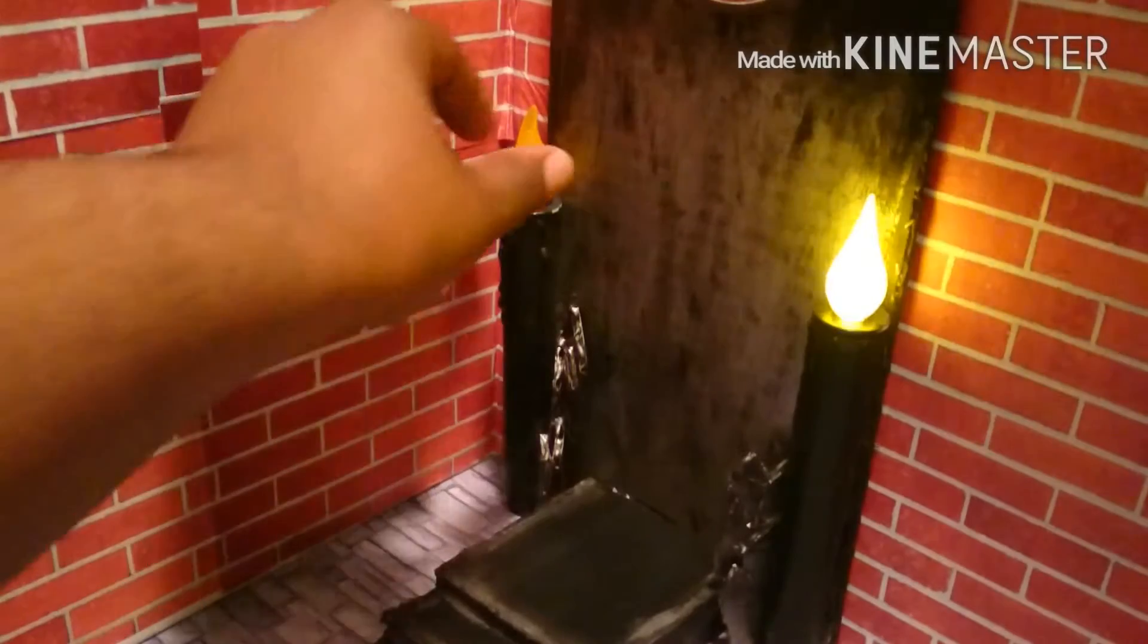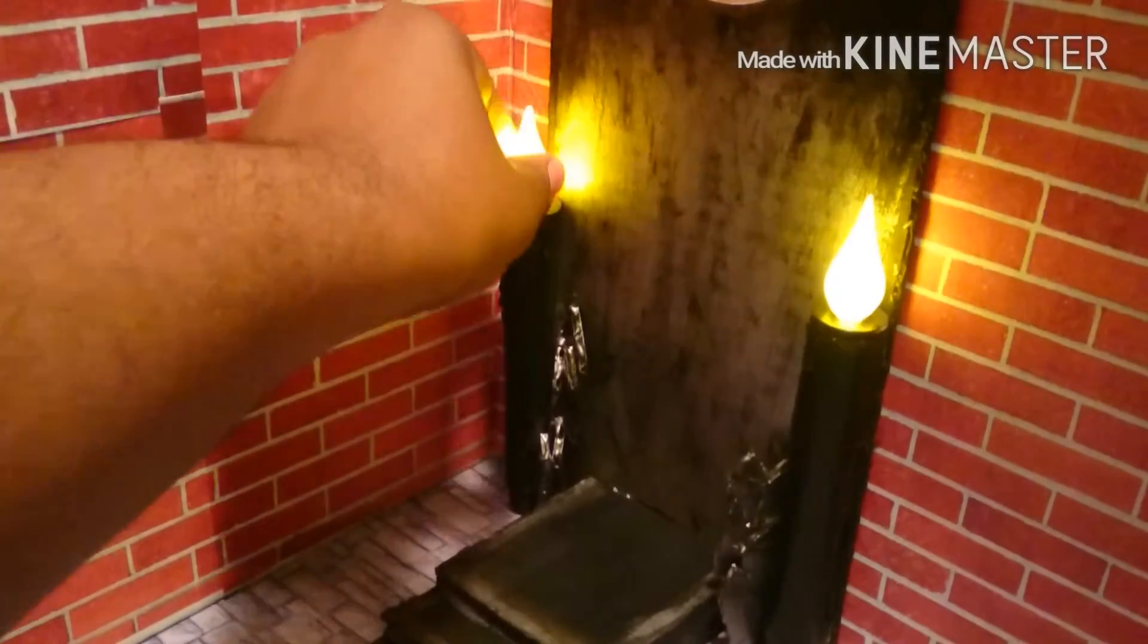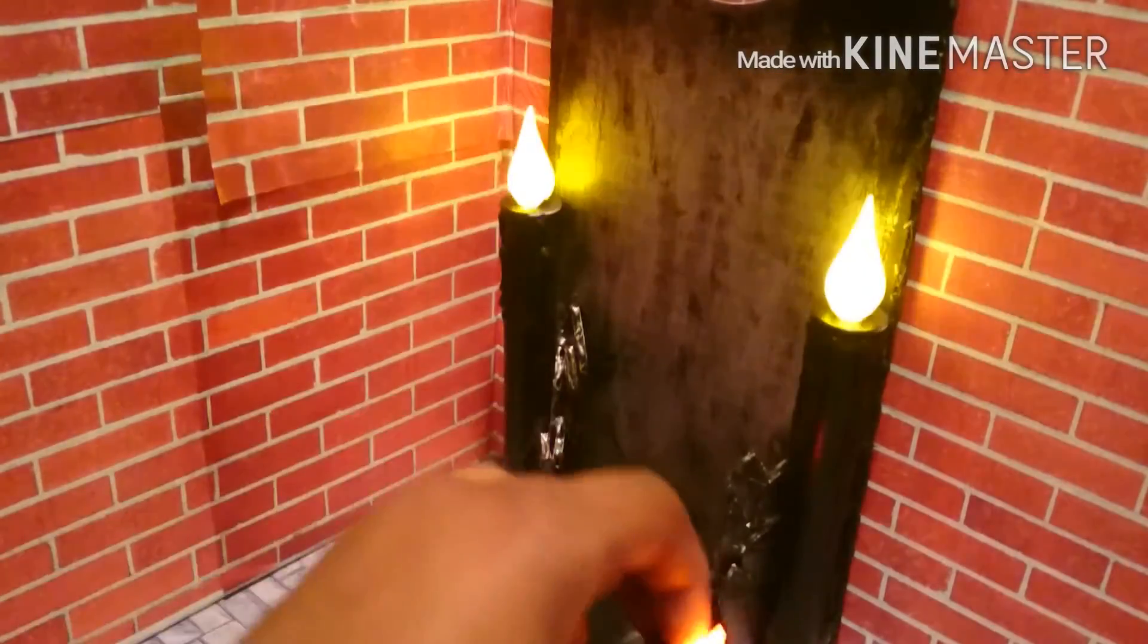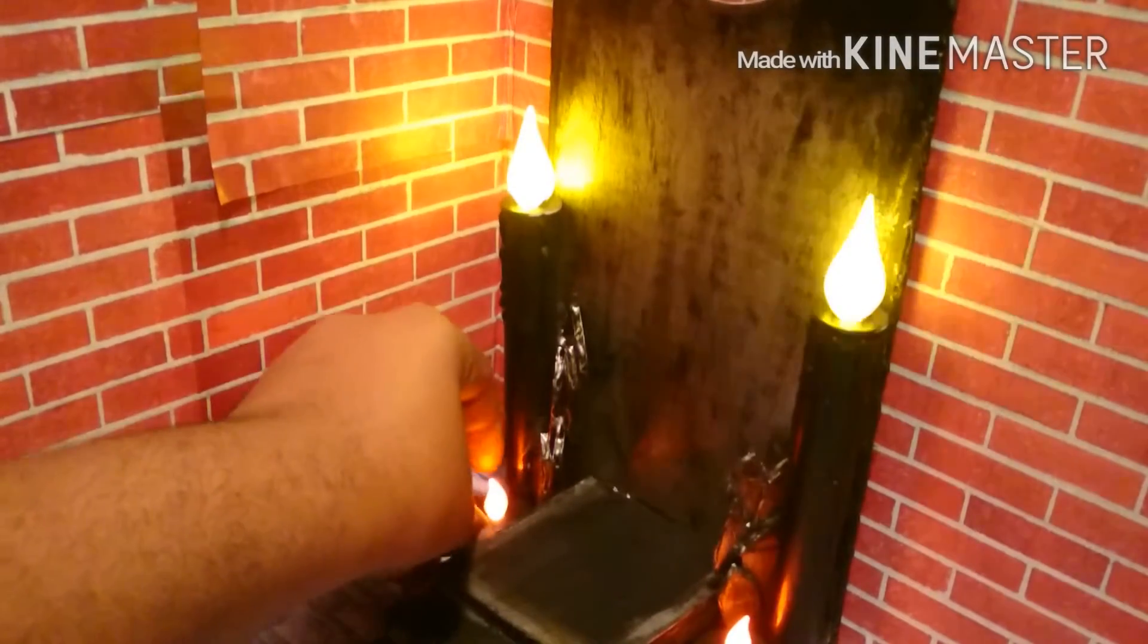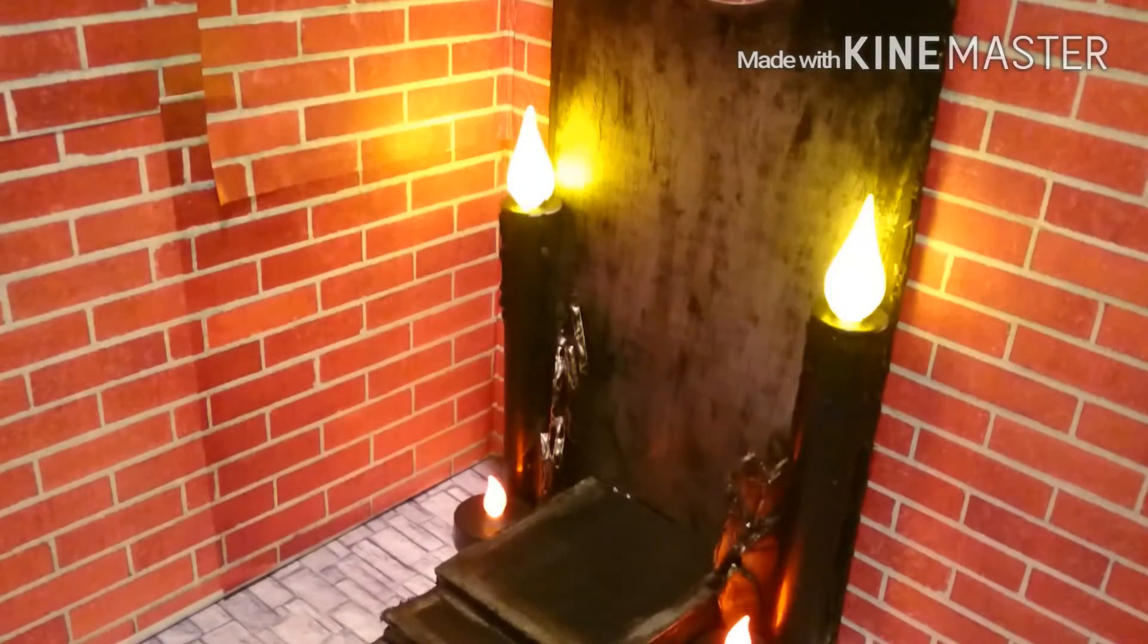And now just twist on the candles to give it a little bit of glow. To add a little bit more glow, I add these little flameless tea candles down here at the bottom I got from the dollar store. And we're done.